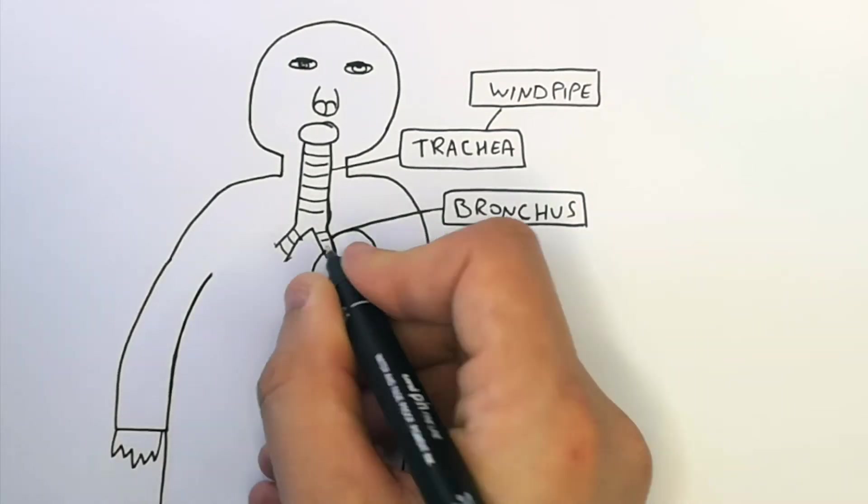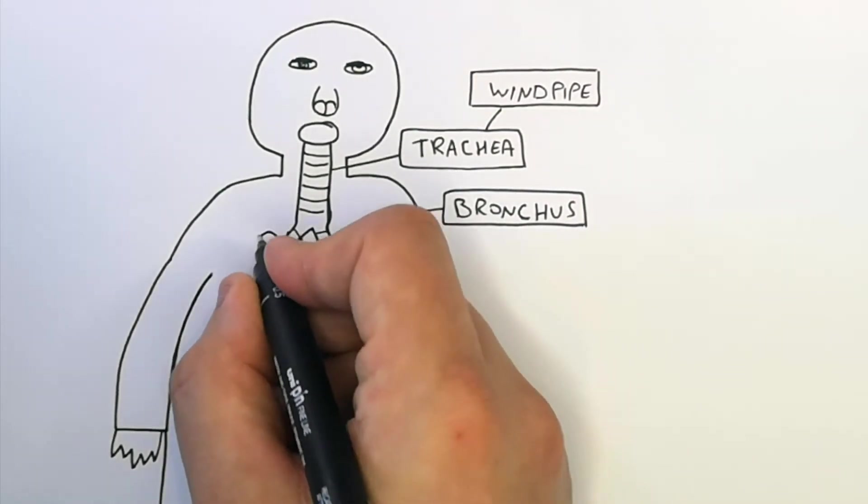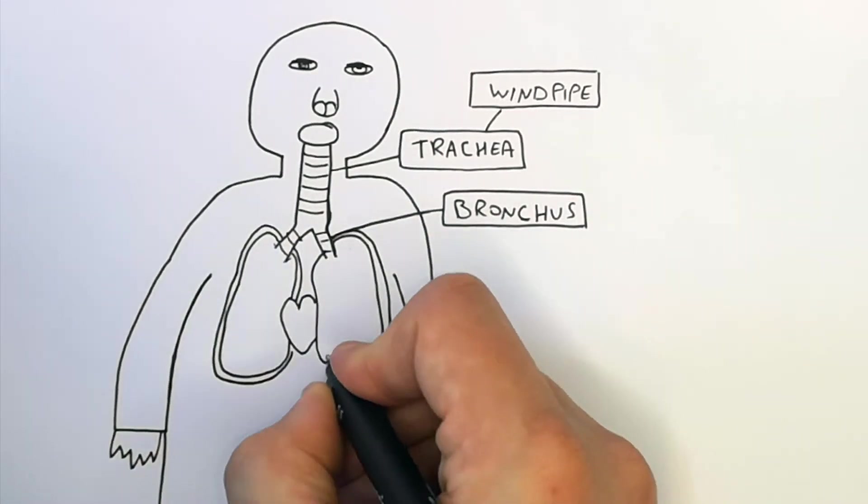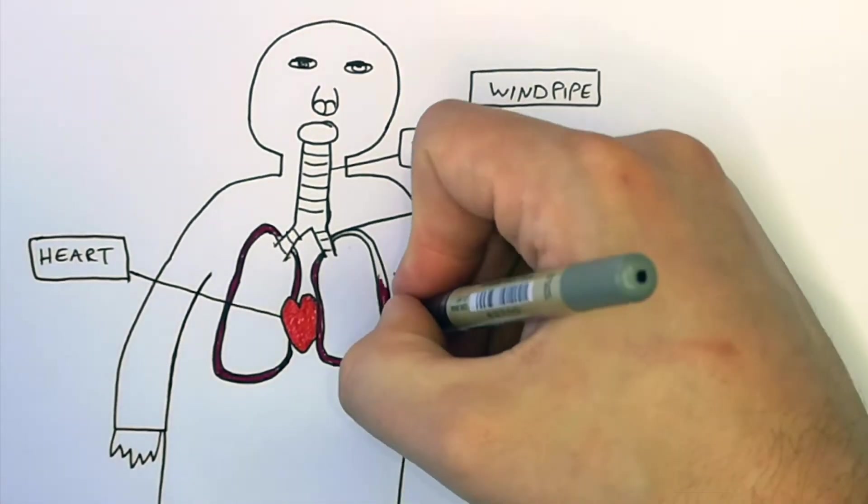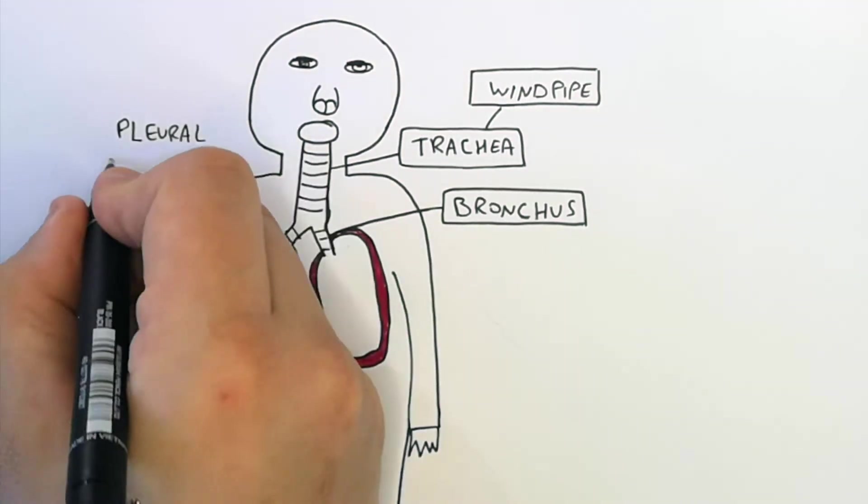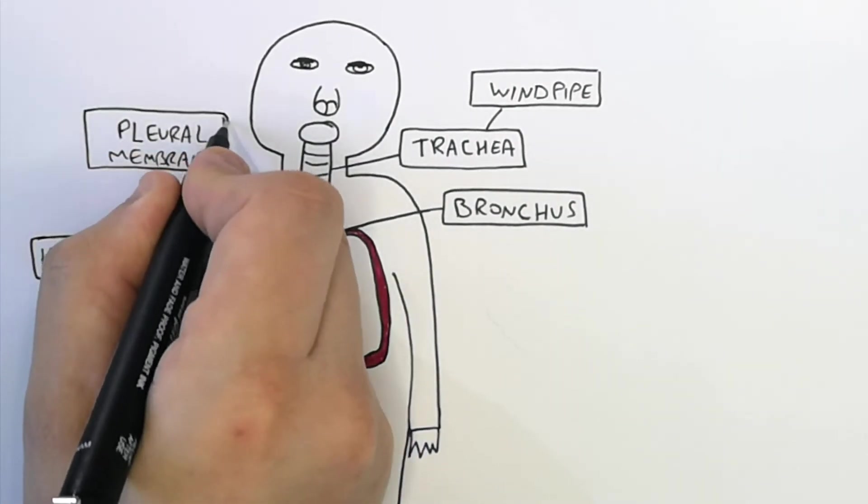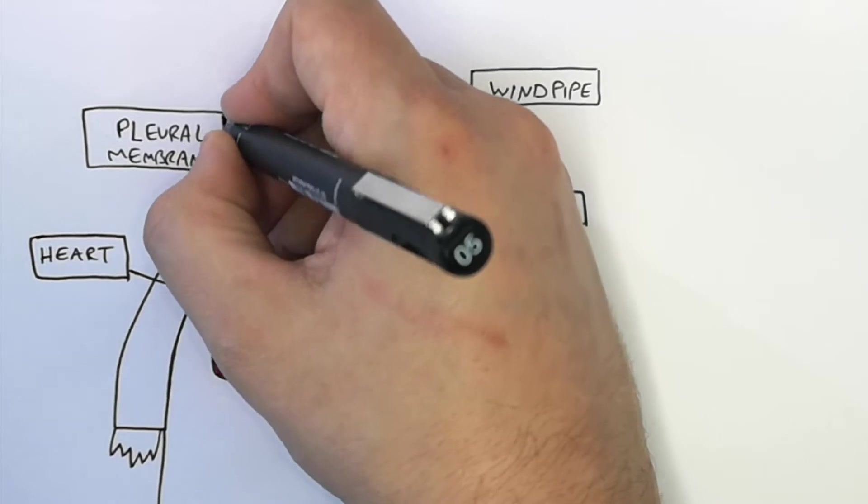I'm now drawing our two lungs and our heart. What I'm drawing here is the pleural membrane. The lungs are surrounded by the pleural membranes. These are a moist membrane so that the lungs can move freely inside the pleural cavity.